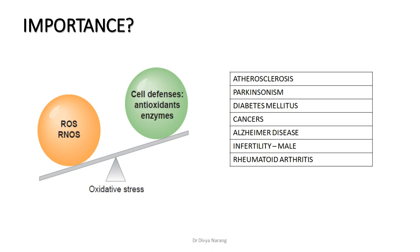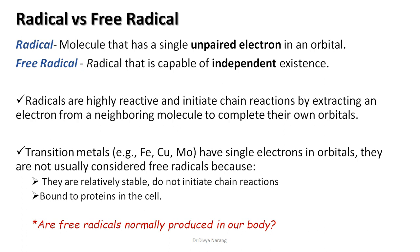Disorders associated with free radical injury include diabetes, cerebrovascular disorders, reperfusion injury seen in myocardium, multiple sclerosis, emphysema, retrolental fibroplasia seen in the lens of the eye, preeclampsia associated with pregnancy, Parkinson's disease, rheumatoid arthritis, male infertility, and aging. Increased oxidative stress has been found to be the most acceptable theory for aging.